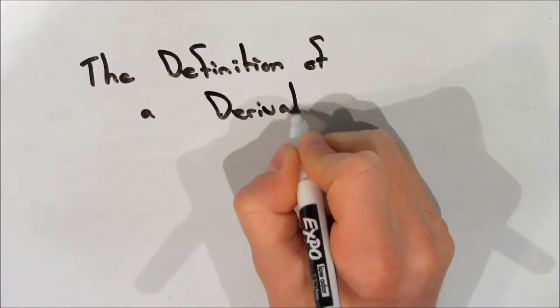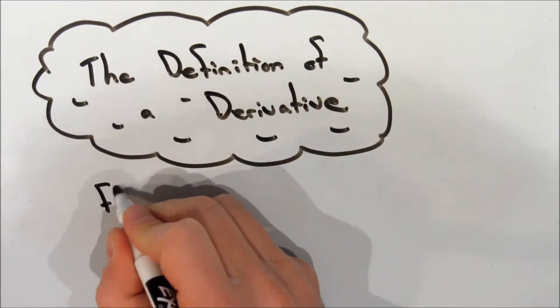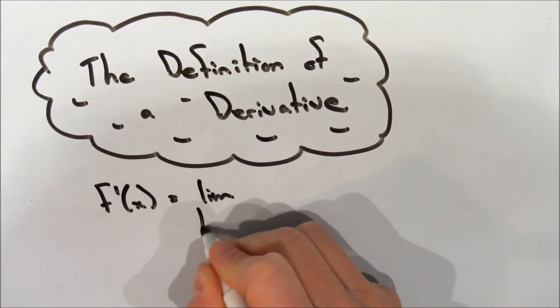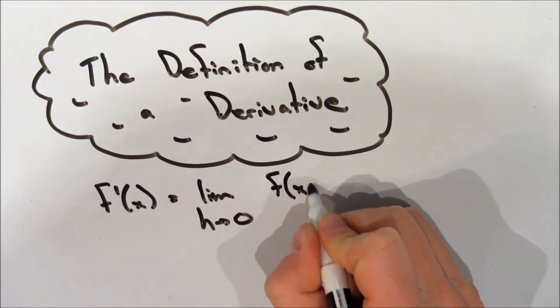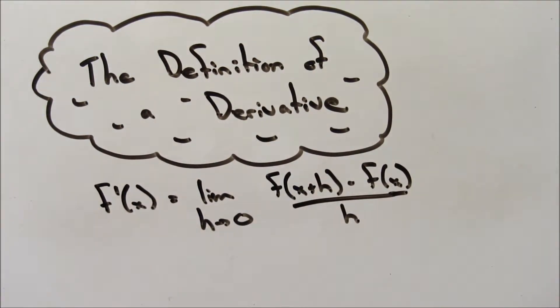Today, I will be talking about the definition of a derivative. So, you might have seen this formula: f prime of x is equal to the limit as h approaches 0 of f of x plus h minus f of x over h. But what does this mean?